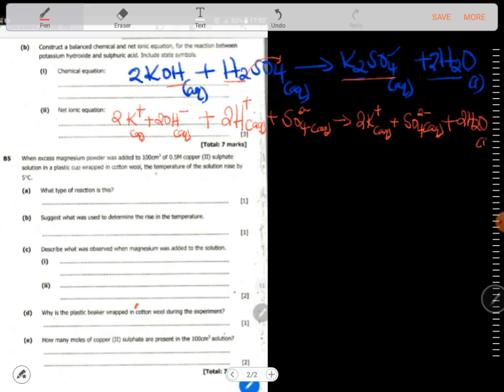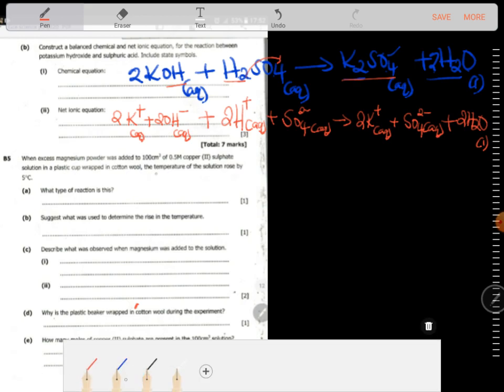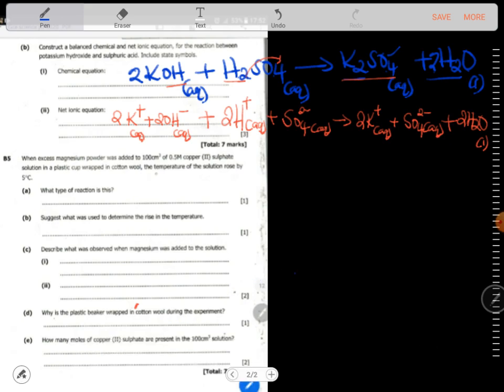Now we need to cancel which ones are not. We need to cancel the spectator ions. Here we have potassium, even here we have potassium, it is equal. What else? We have this here, we also have this here. That's all.